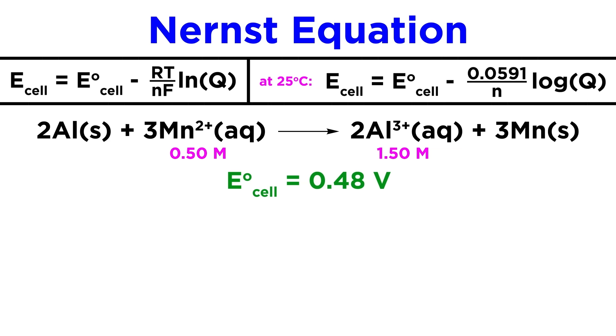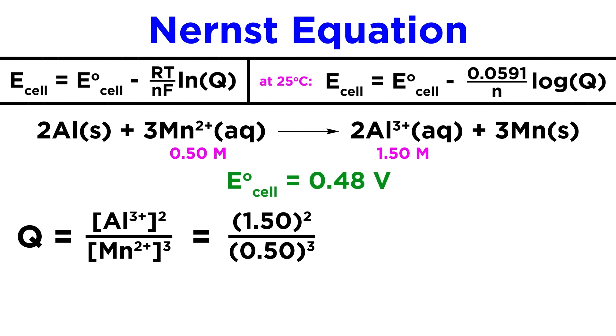To find the cell potential, we simply use the Nernst equation. First, let's calculate Q. Aluminum ions are the product, so that will go up top, over the manganese ions. Let's plug the concentrations in, making sure to raise them to the power of their stoichiometric coefficients. And we get 18 for Q.